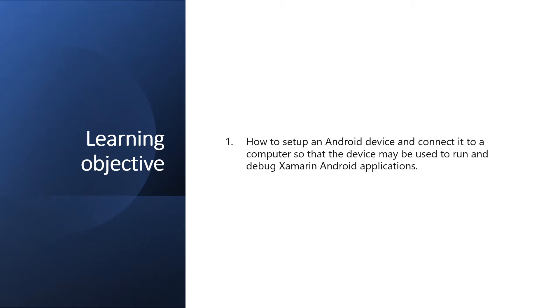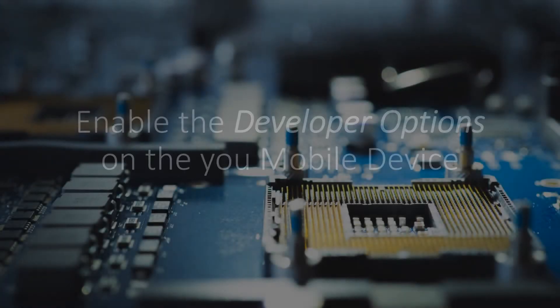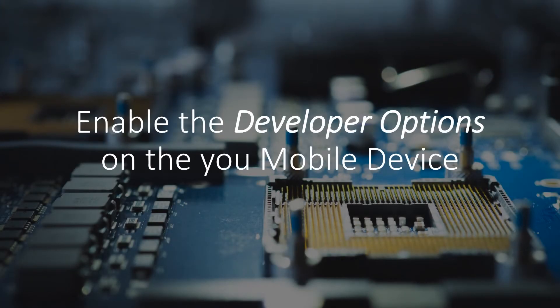Good day everyone. I'm Michael, and I'm using a text-to-speech program to have a more clear speech and audio. This video lesson explains how to set up an Android device and connect it to a computer so that the device may be used to run and debug Xamarin Android applications. In order to see and test your apps running on an Android device, you will need to enable debugging and connect the device to the computer. I will be showing you the step-by-step procedure in configuring your mobile device.